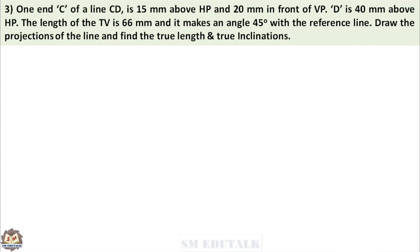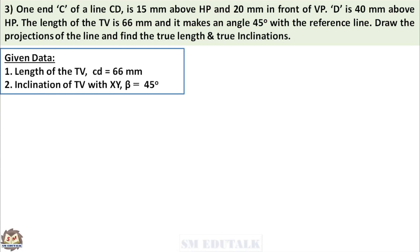Third problem: one end C of a line CD is 15 mm above HP and 20 mm in front of VP. D is 40 mm above HP. The length of the top view is 66 mm and it makes an angle of 45 degrees with the reference line. Draw the projections of the line and find the true length and true inclinations. Given data: top view length CD is 66 mm and top view angle beta equals 45 degrees. So true length is not given here.